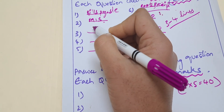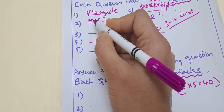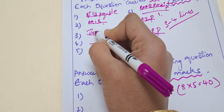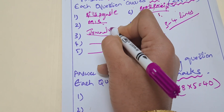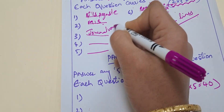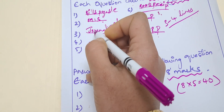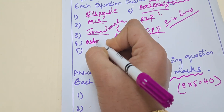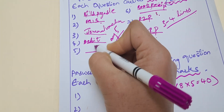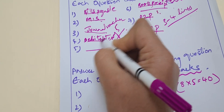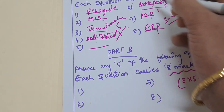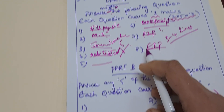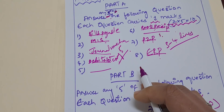Another topic is MIS reports. They will also ask about different types of vouchers — for example, journal voucher, debit note. These are the kinds of questions in Part A. You have to attend any five and then move on to Part B.